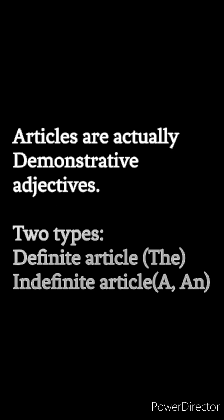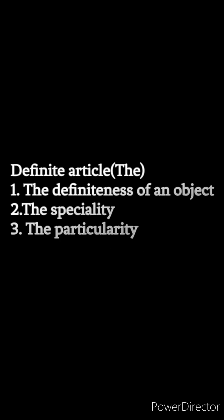Articles are actually demonstrative adjectives. There are two types of articles: definite article and indefinite article. 'The' is called a definite article because it gives the definiteness of an object — it clarifies the speciality and the particularity of the object.